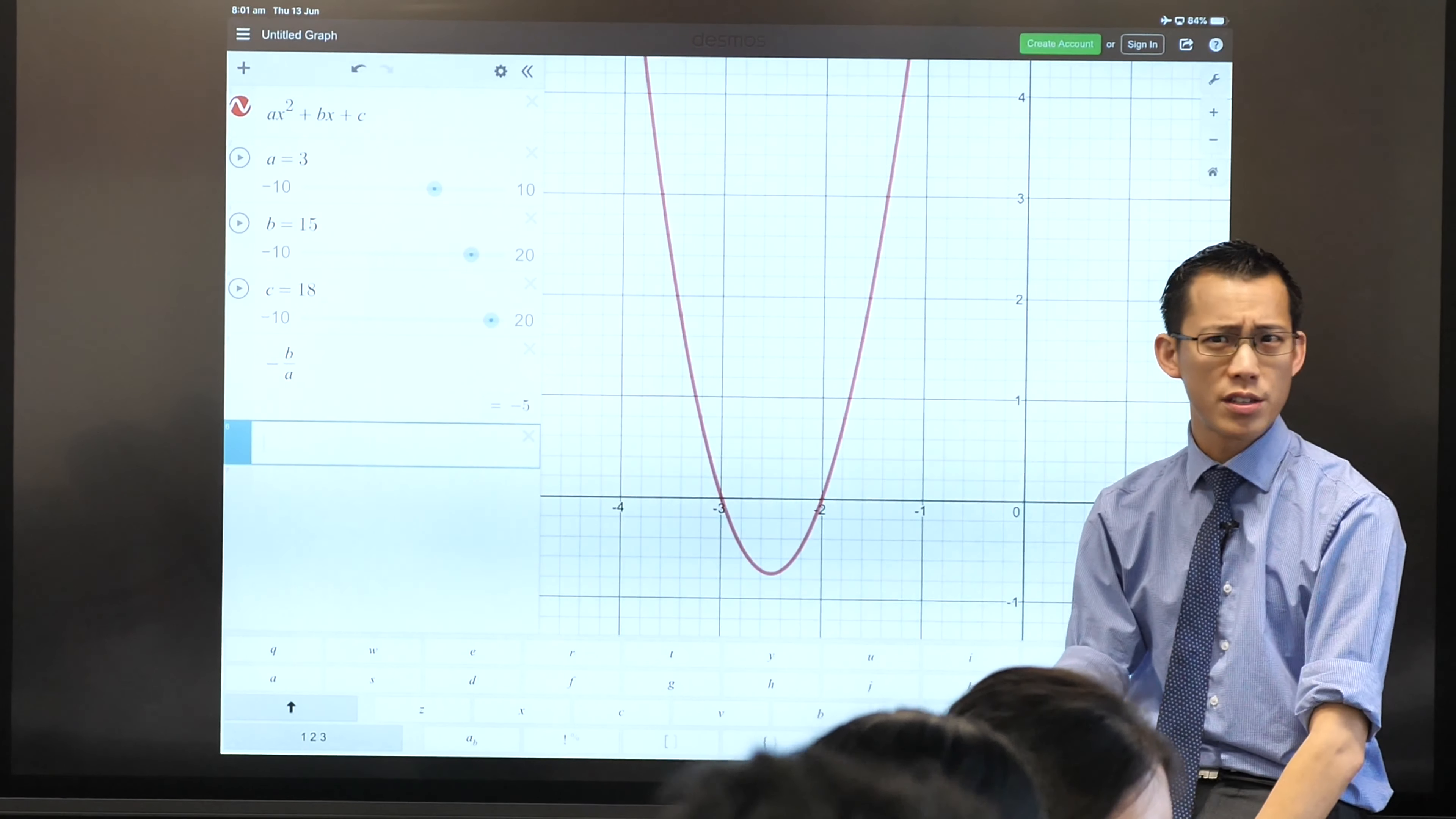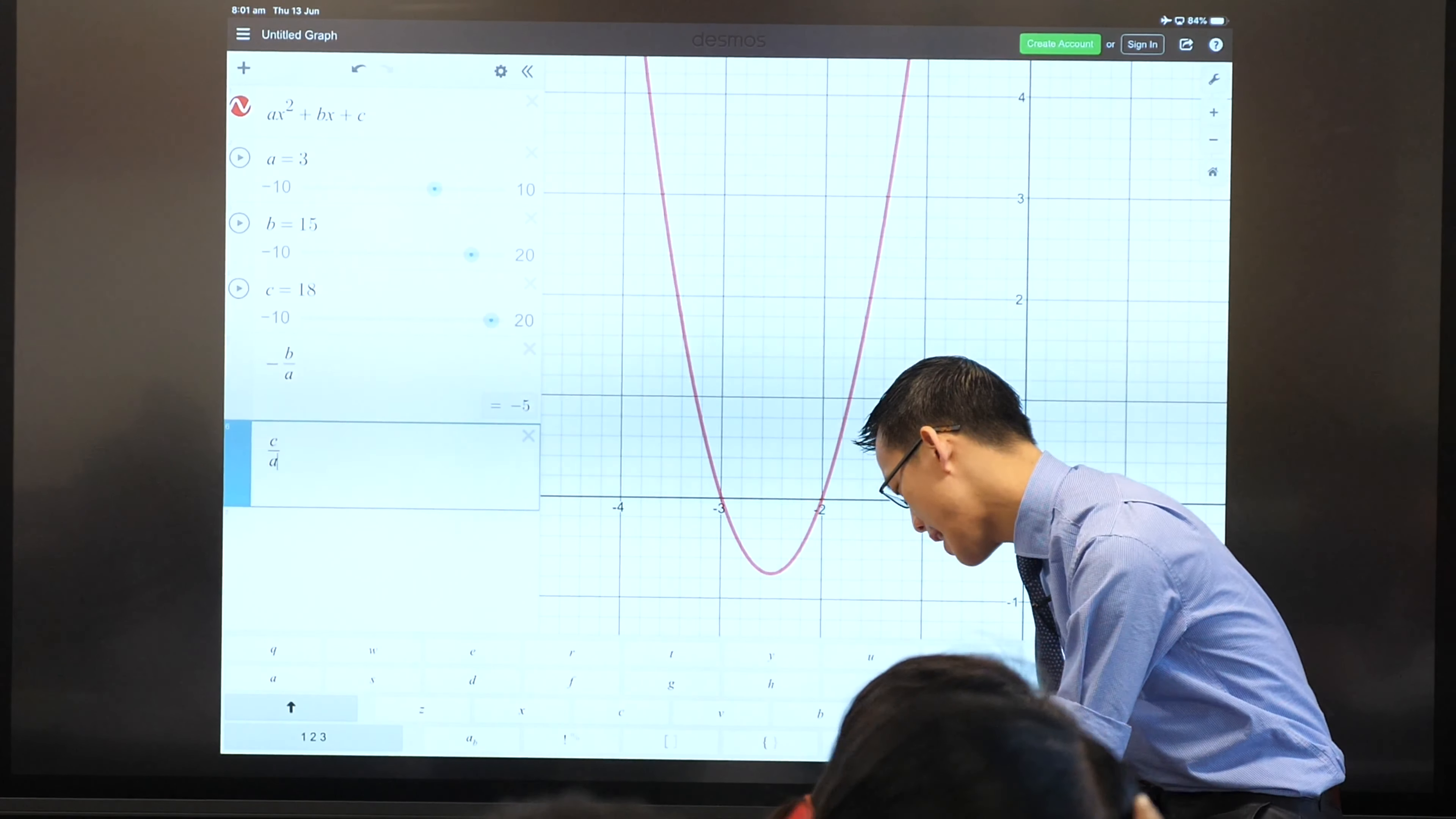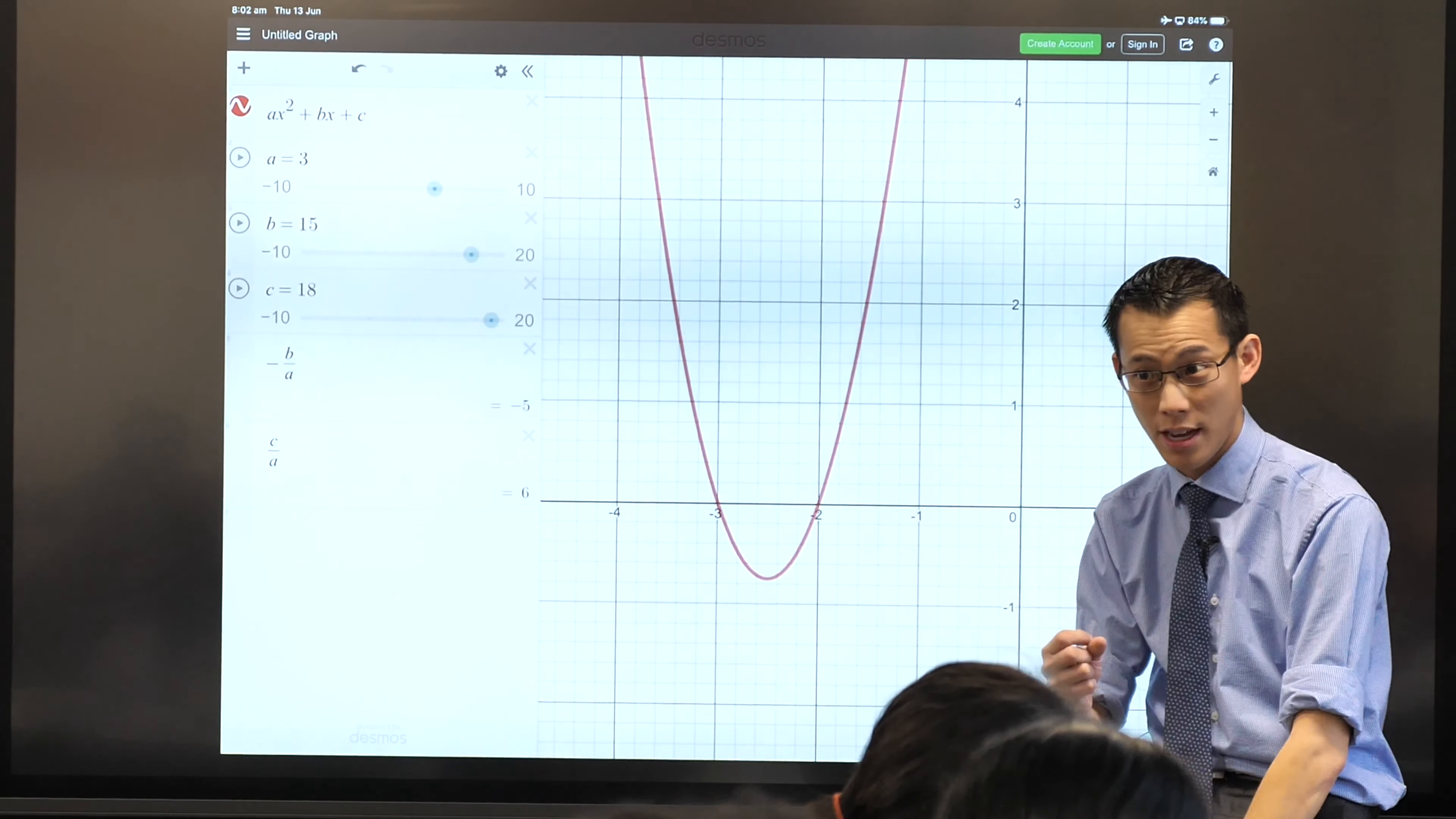We can do this not just with the sum of roots, but also the product of roots. So what should I input down here, what calculation should I get Desmos to do? C over a, thank you Laura. So I'm going to put c and divide and then a, and unsurprisingly we get six like we saw before. Negative two times negative three equals six.